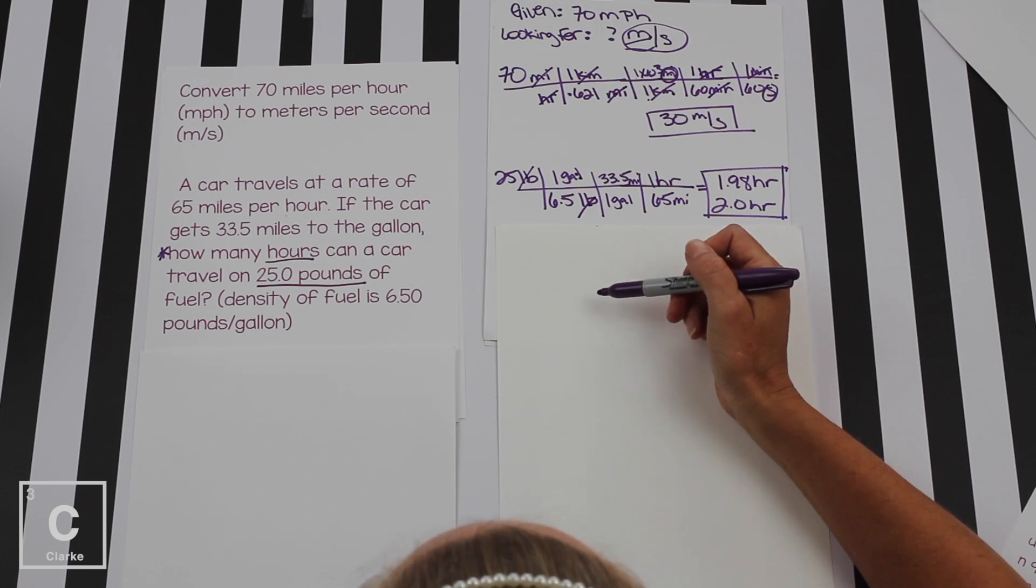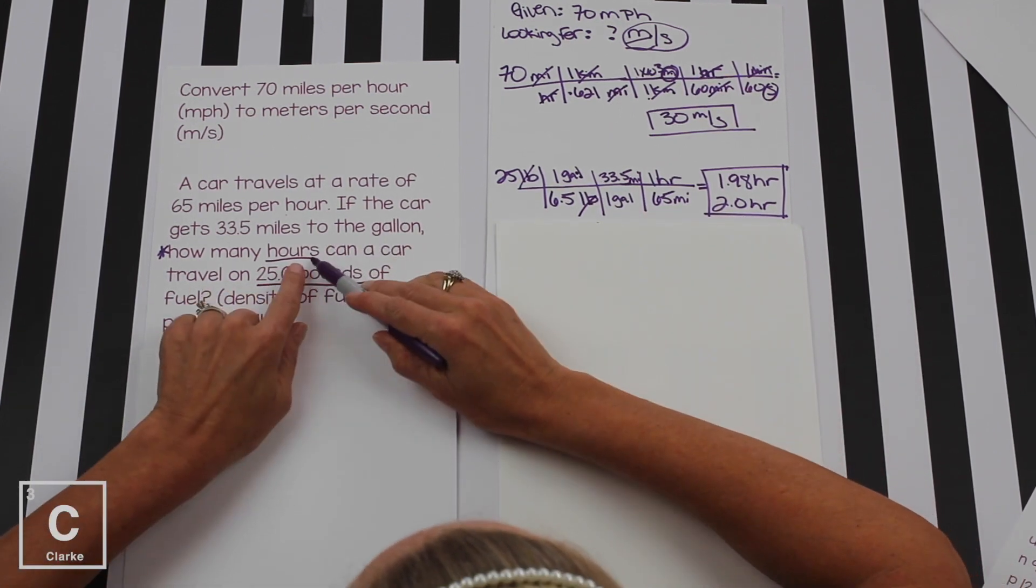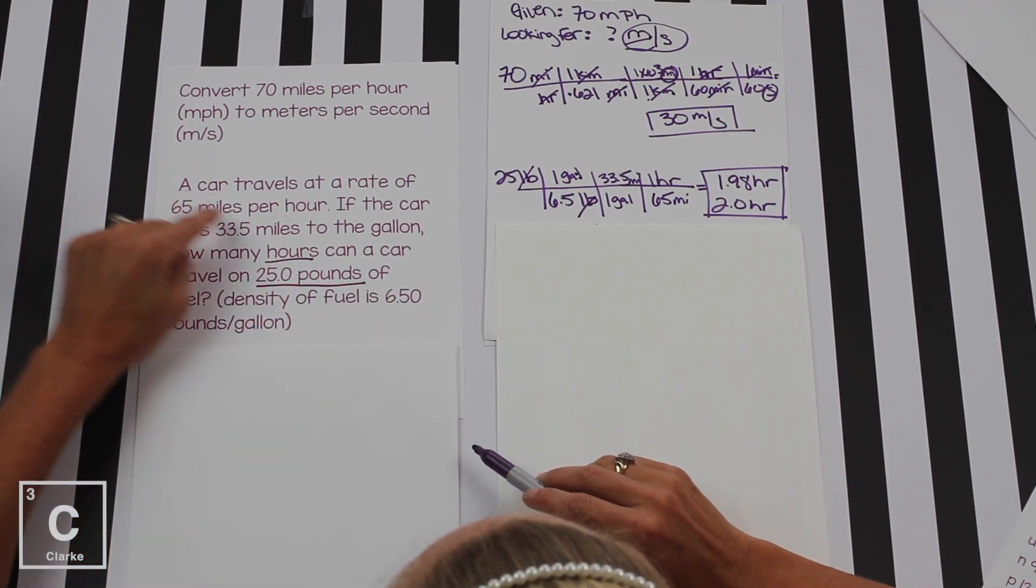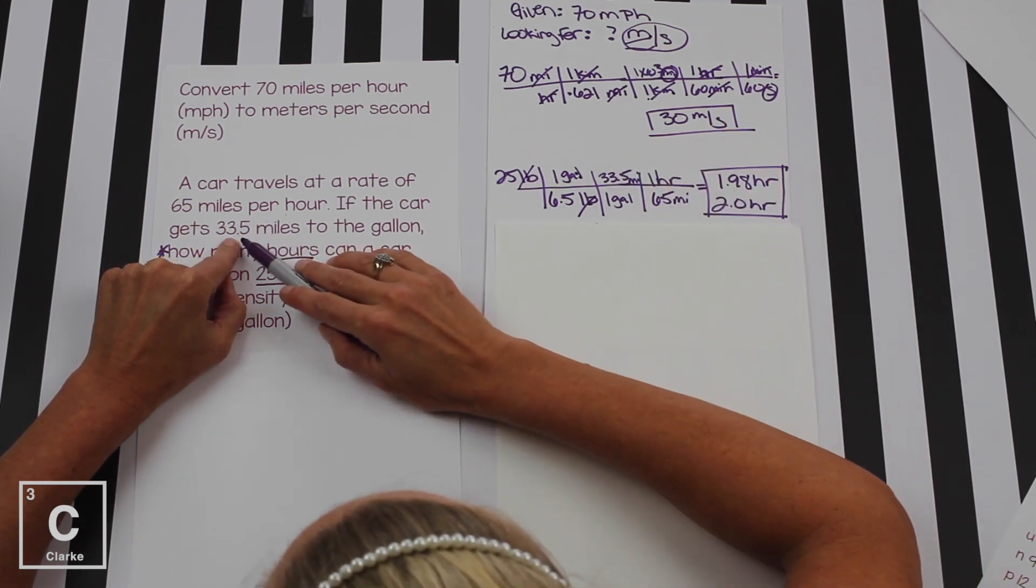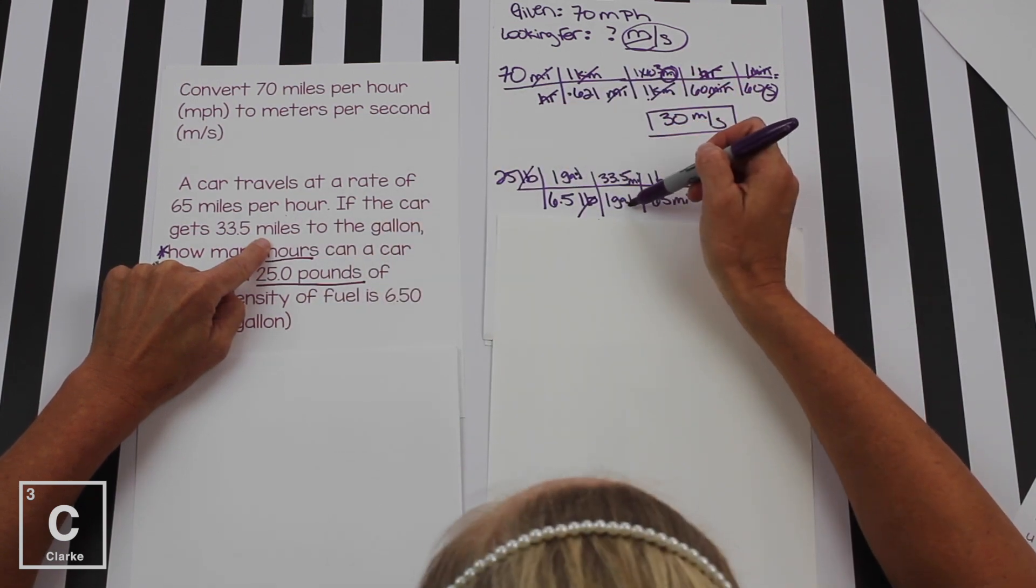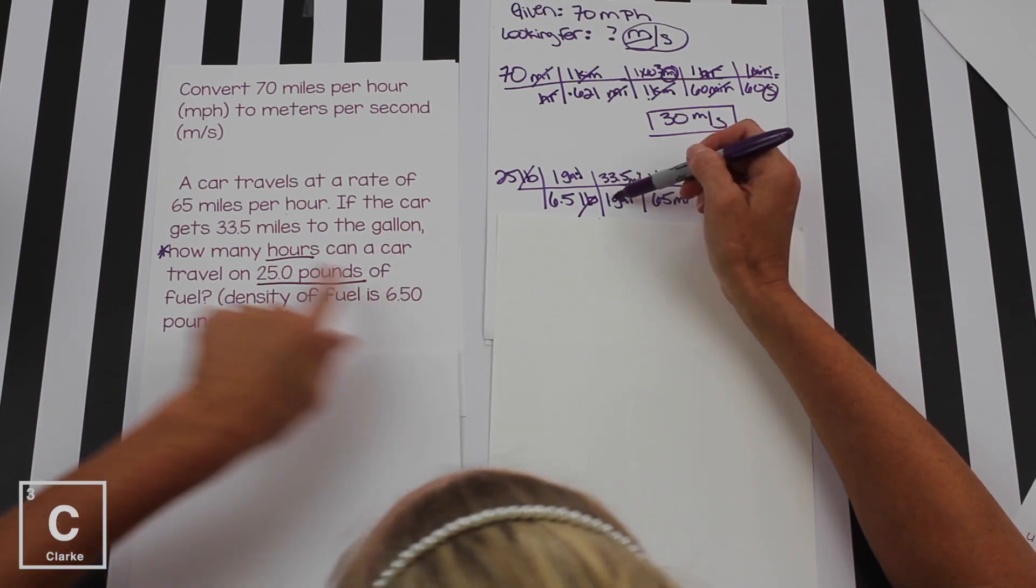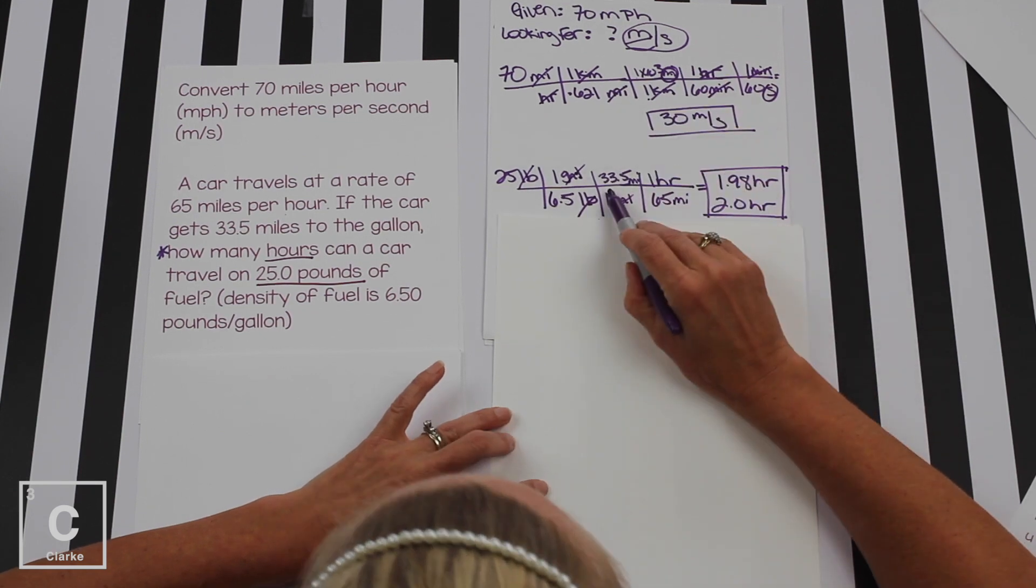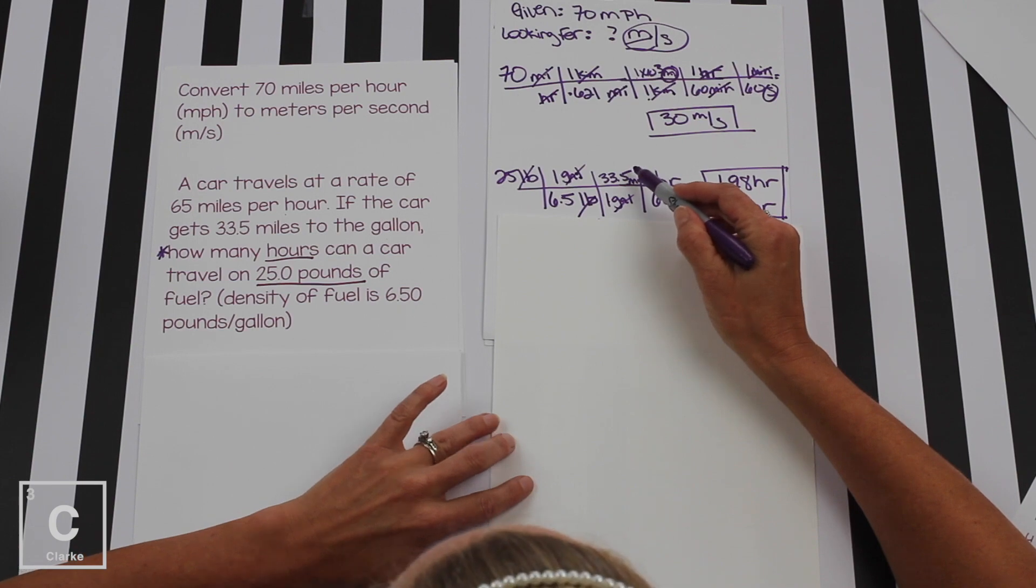Now we're ready to find a conversion factor with the gallons in it because we got to get this gallons to go away. Because remember, we're trying to make it here to hours. 33.5 miles to the gallon. There it is. And 33.5 is beside miles. So we bring gallons down. Gallons is on the bottom, so it's going to just have that one because the 33.5 is going to go with the miles. Gallons cancel. We're going to put that 33.5 on top with the miles. And we're ready for our last conversion factor.